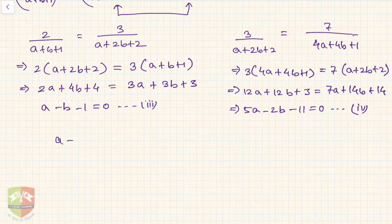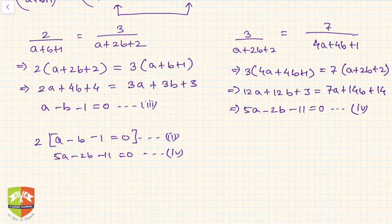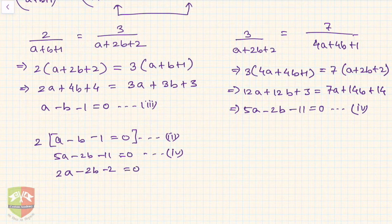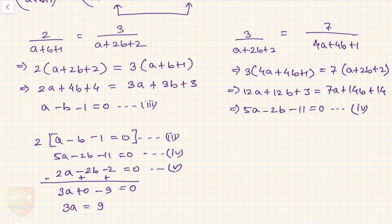We now have equation 3: a − b − 1 = 0, and equation 4: 5a − 2b − 11 = 0. To eliminate b, multiply equation 3 by 2: 2a − 2b − 2 = 0 (equation 5). Subtracting equation 5 from equation 4: 3a − 9 = 0, so a = 3.